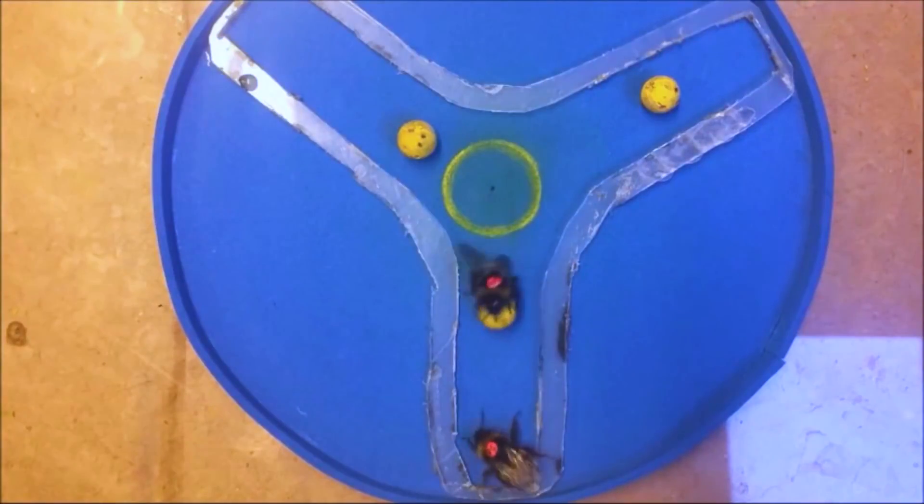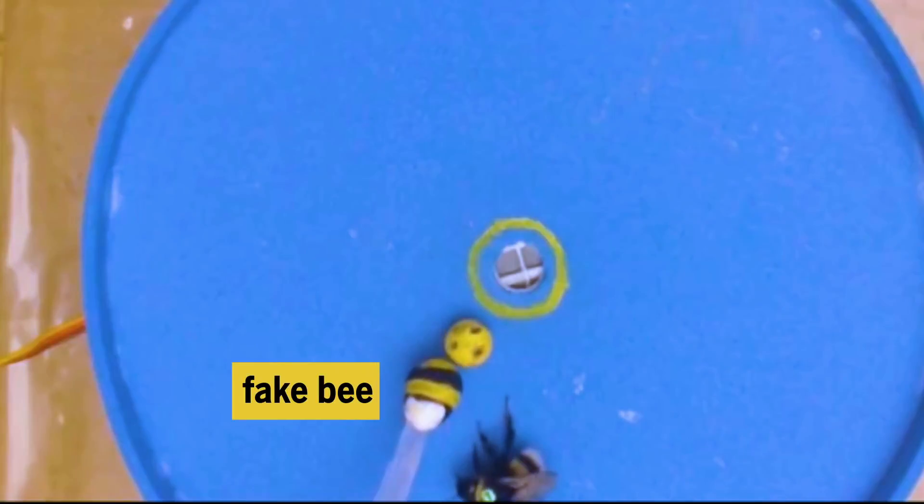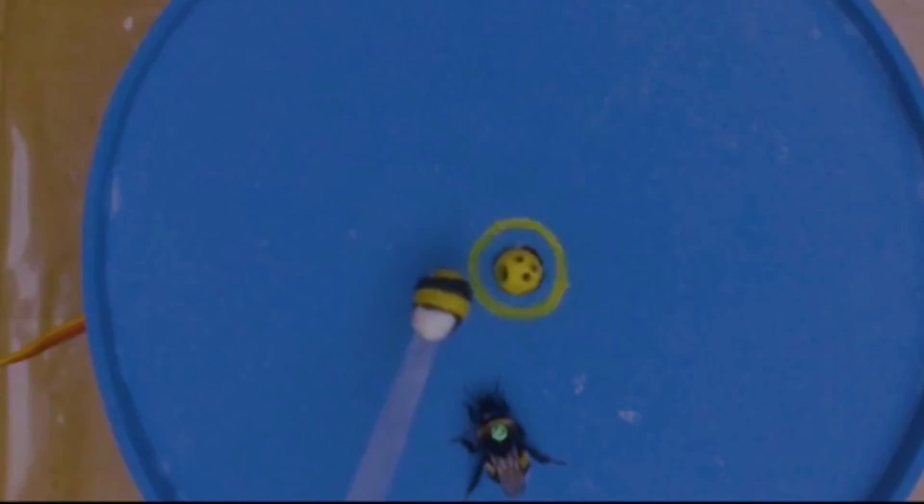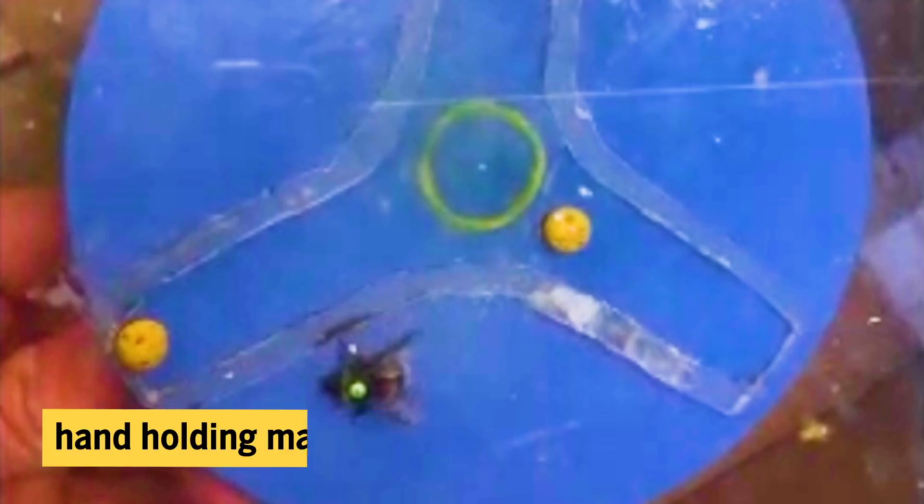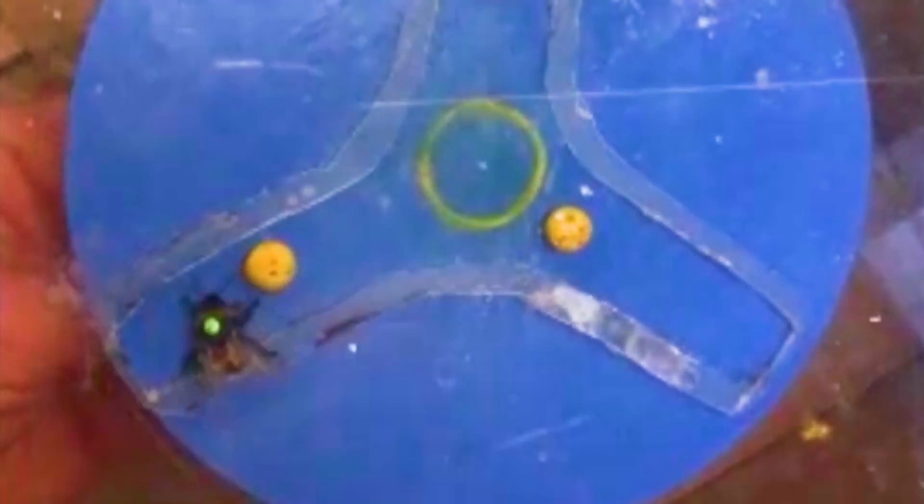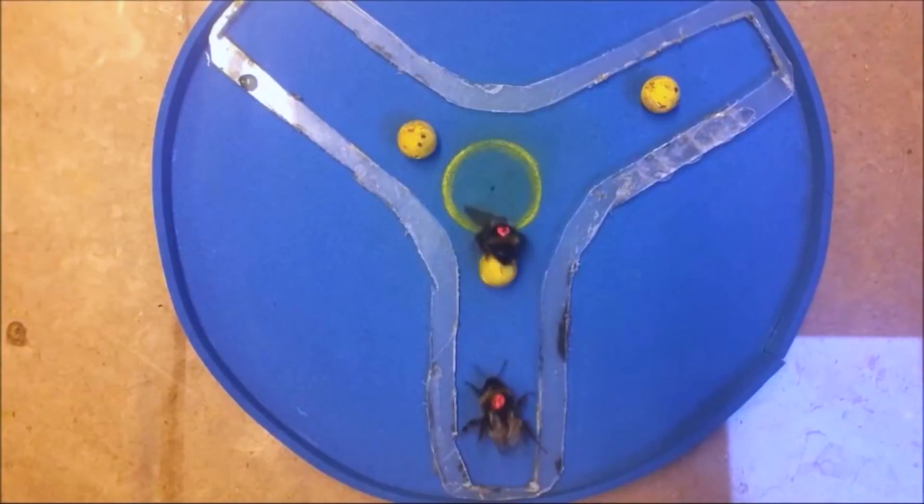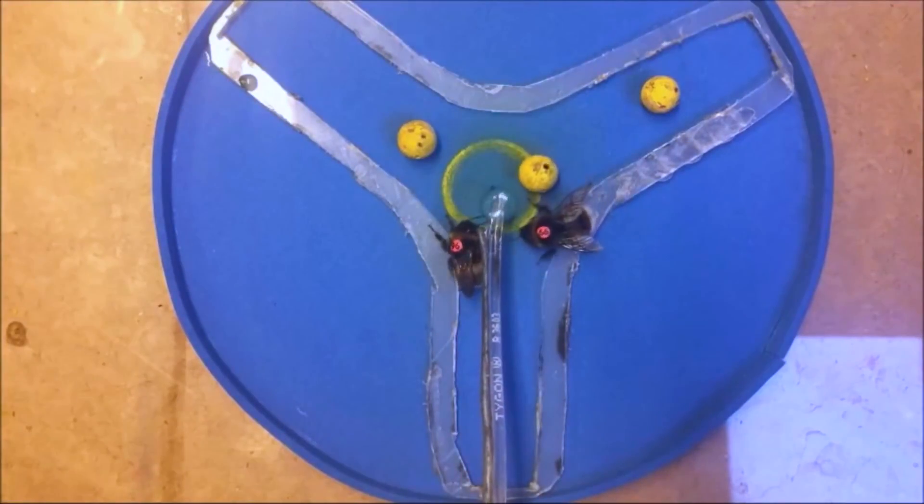They were taught by other bees, by fake bees held by scientists, or by invisible ghost bees, actually a magnet. But they didn't learn so well from the ghost bees. Real bees were better teachers.